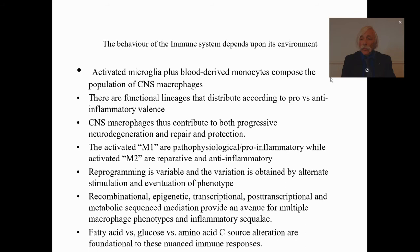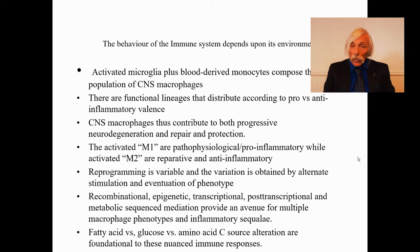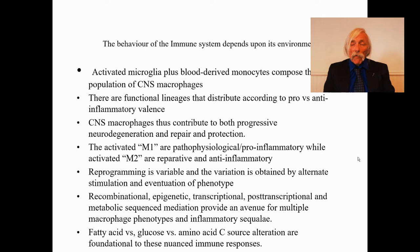The mechanisms involved include recombinatorial at the DNA level, epigenetic at the DNA, RNA, and protein level, transcriptional, post-transcriptional, and metabolic sequenced mediation — including post-translational modifications. These provide an avenue for multiple macrophage phenotypes and whatever inflammatory sequelae will come from them. Fatty acid versus glucose versus amino acid carbon source alteration are foundational to all of those mechanisms, and then whatever nuanced immune sequelae follow.